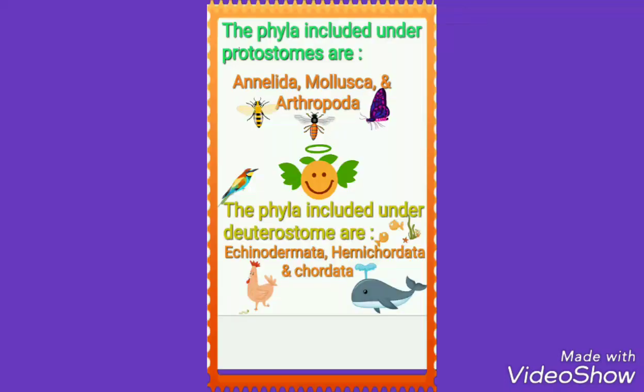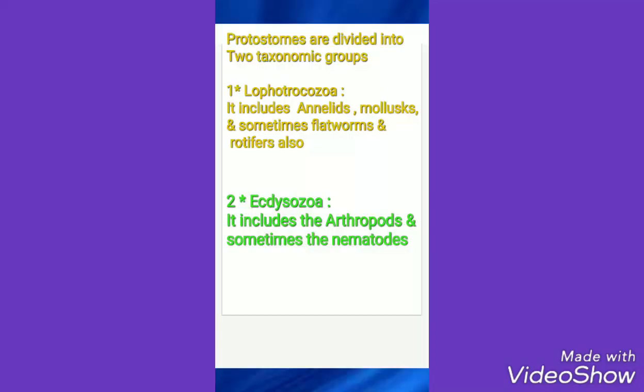The phyla included under the deuterostomes are echinodermata, hemichordata, and chordata. Protostomes are further subdivided into two groups: the lophotrochozoa and the ecdysozoa.